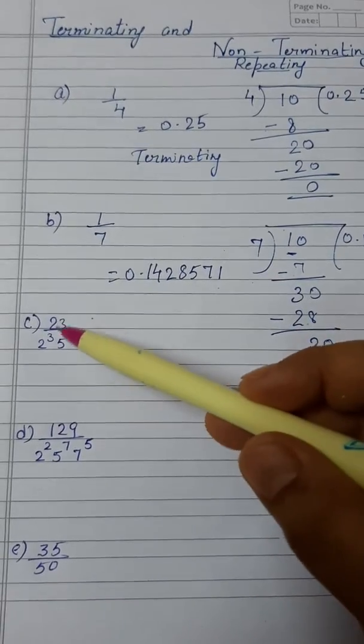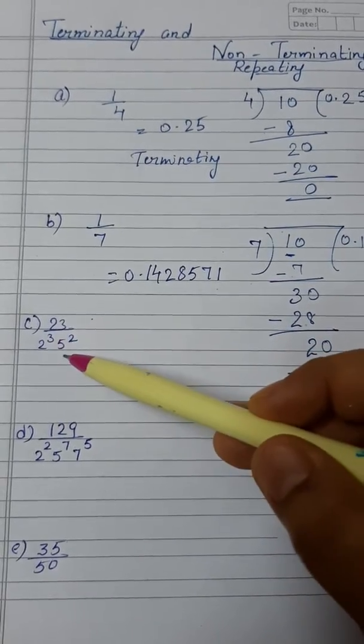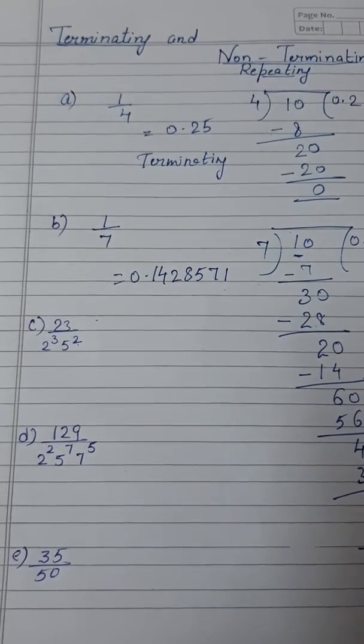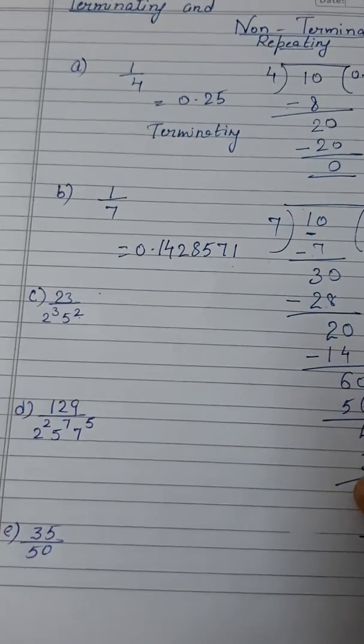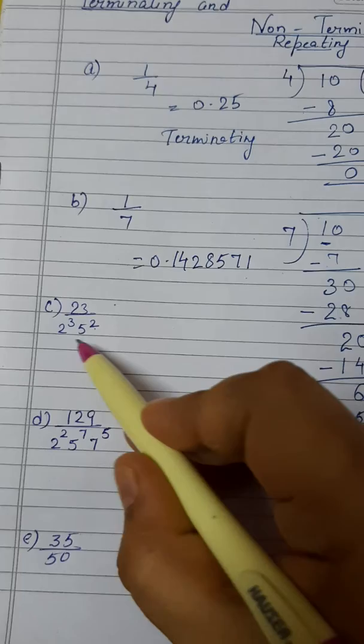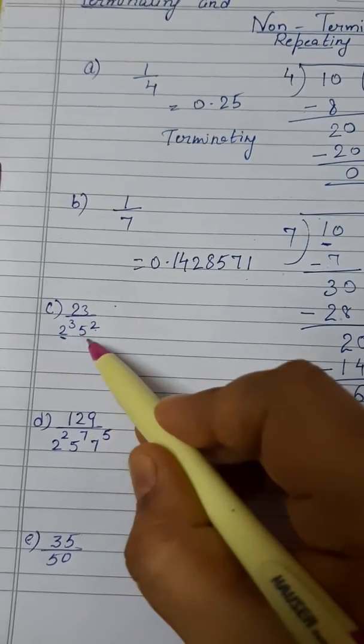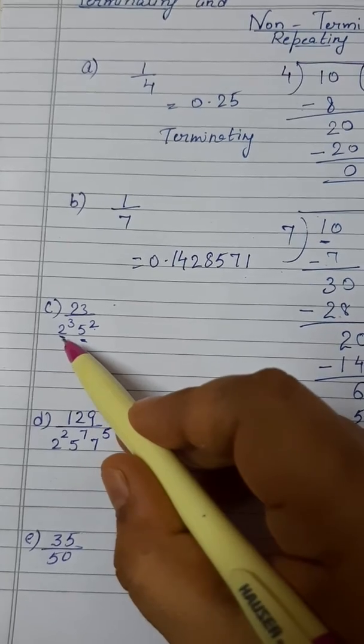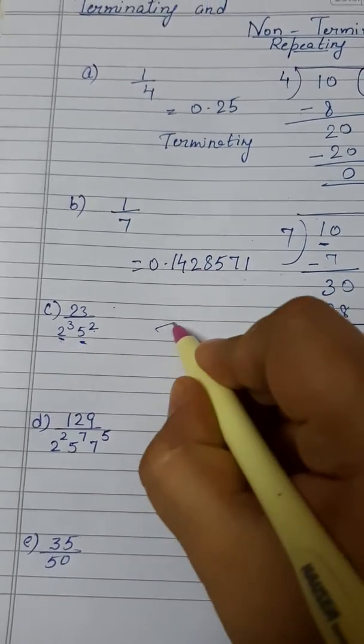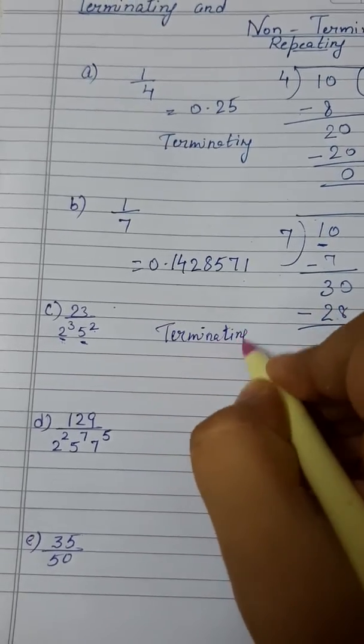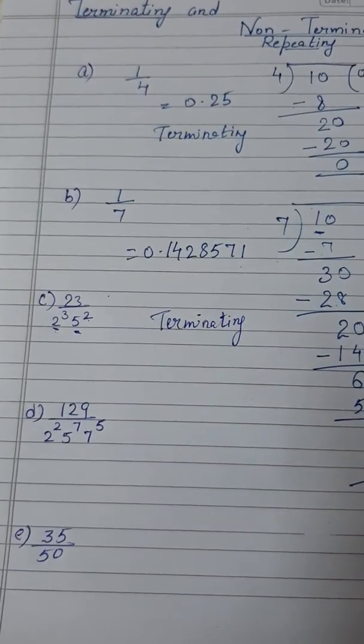Suppose I am going to tell you 23 by 2 raised to the power 3 and 5 square. See, without division we can check the denominator. We are having the denominator in the powers of 2 and 5. If we are having the denominator in the powers of 2 and 5, it will be terminating as we have done it yesterday also. So you can check it out in my last video.